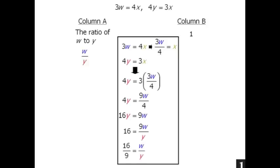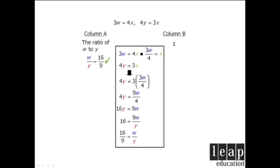So W over Y equals 16 over 9. So we now know that column A is equal to 16 over 9, in which case column A is greater than column B, which means our answer is A. Thank you.